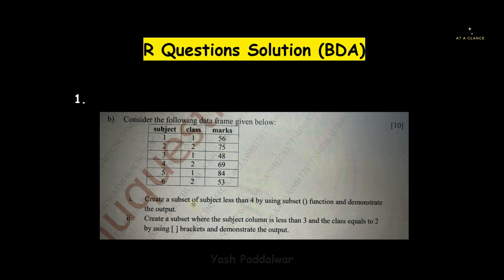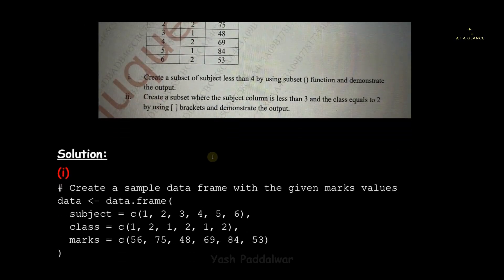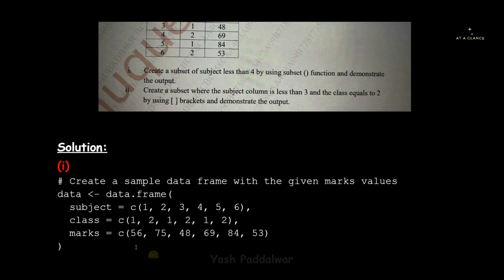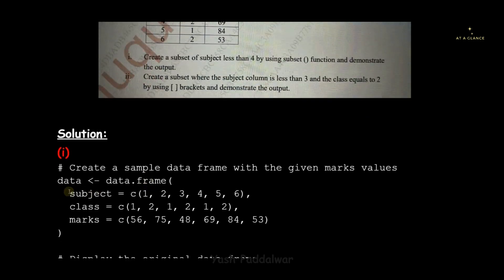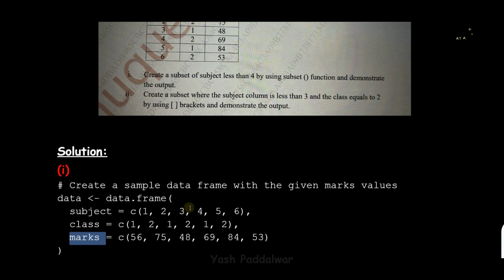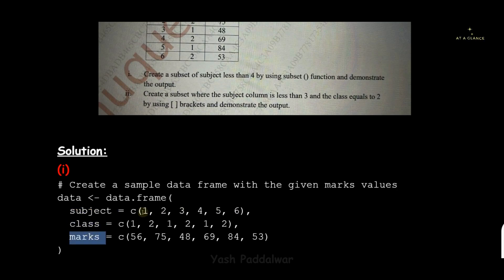We have to write the code script in R language using the subset function and demonstrate the output. First we'll have to construct this particular table in the program. Here you can see a small piece of code which will be used to construct this data frame. We have declared a variable named 'data' in which we'll store this data set. Whenever we have to create a data frame we use the data.frame() function, and inside this we pass the columns as the list of arguments. We have three columns in the data set: subject, class, and marks.